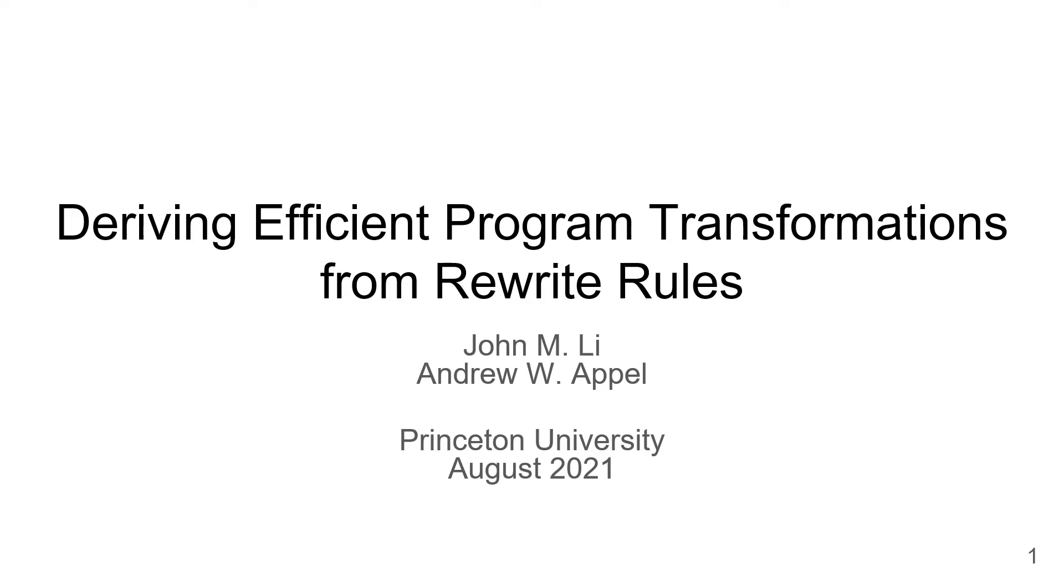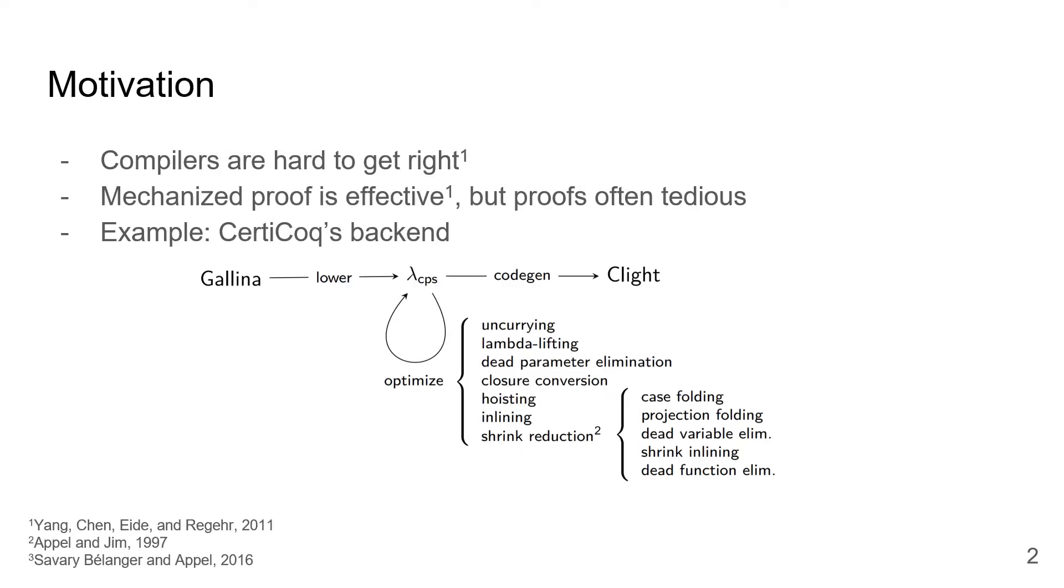Hi everyone, I'm John, and I'll be presenting our work on deriving efficient program transformations from rewrite rules. Compilers are very difficult to write without bugs, so lately people have taken to writing compilers along with mechanized proofs of their correctness. This is very effective at squashing bugs, but mechanized proofs can be extremely tedious to do.